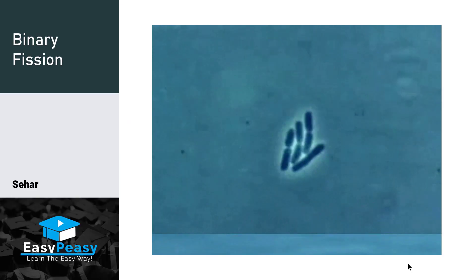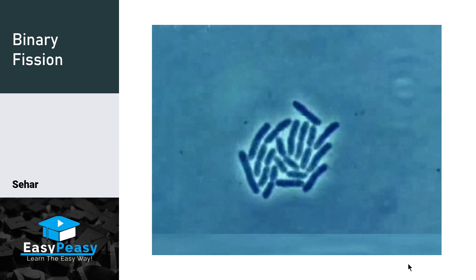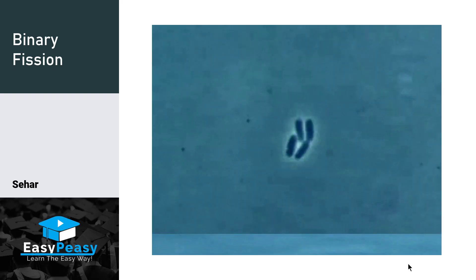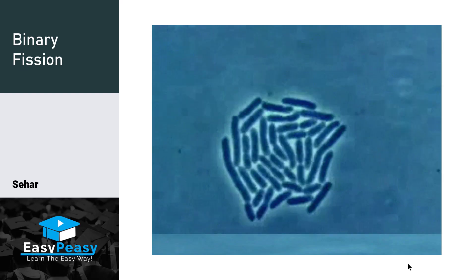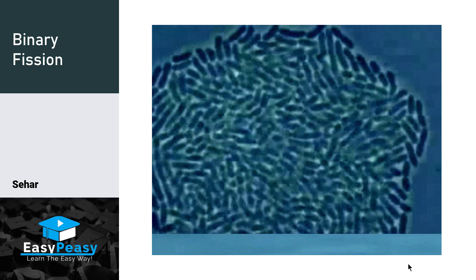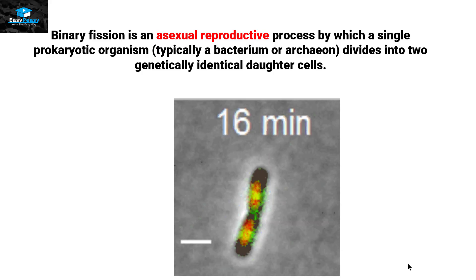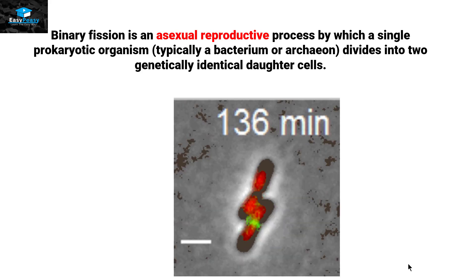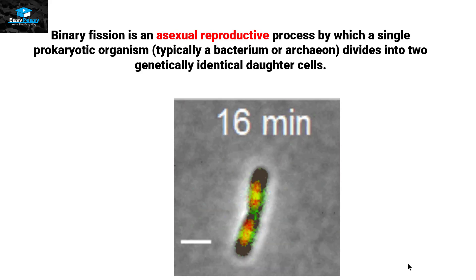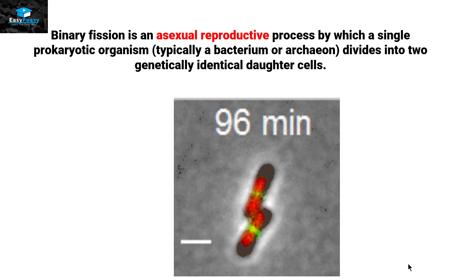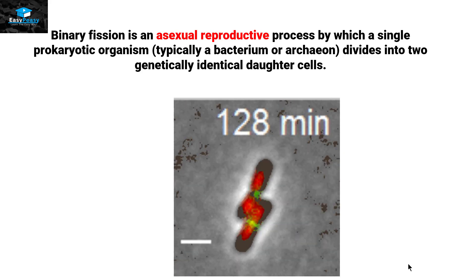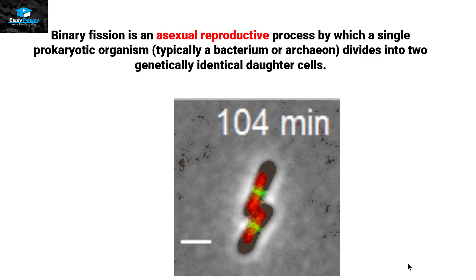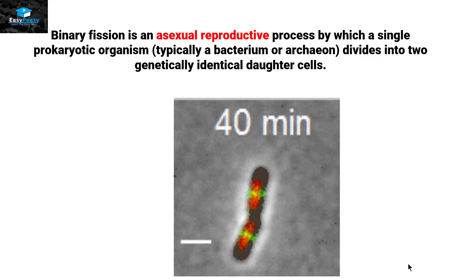Hello everyone, this is Seher from EZPZ and the topic we are going to discuss today is called binary fission. Binary fission is asexual reproduction in which a single cellular organism, specifically the prokaryotes, divides into two. Because this is asexual reproduction, the daughter cells will be genetically identical to their parents.